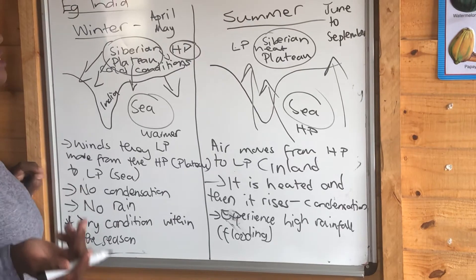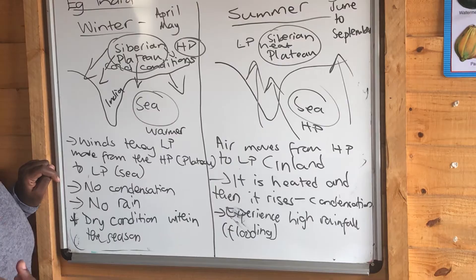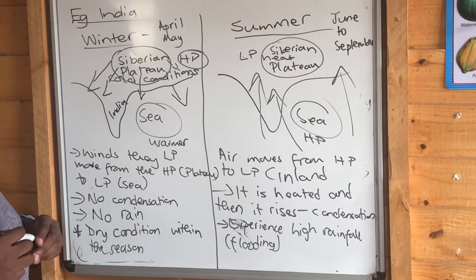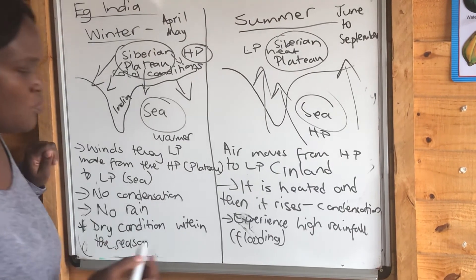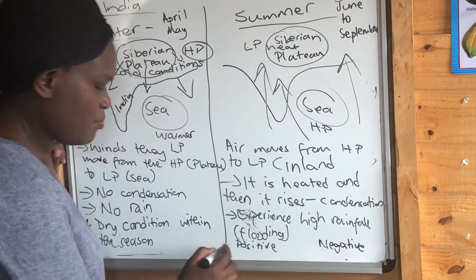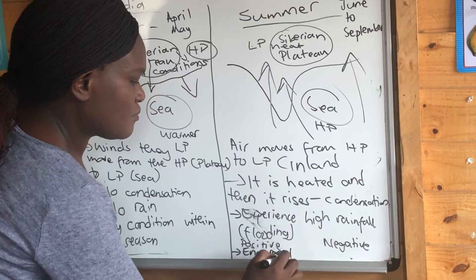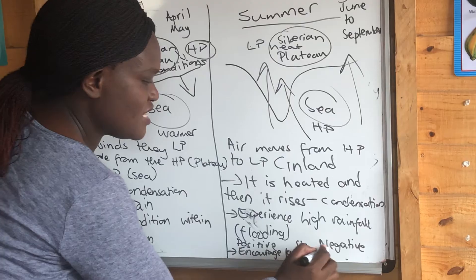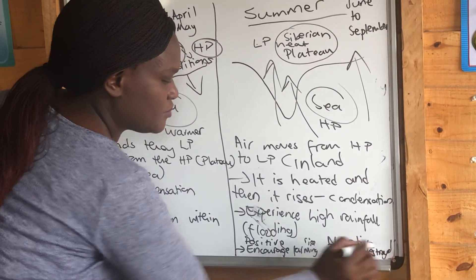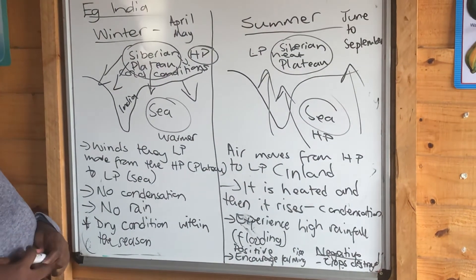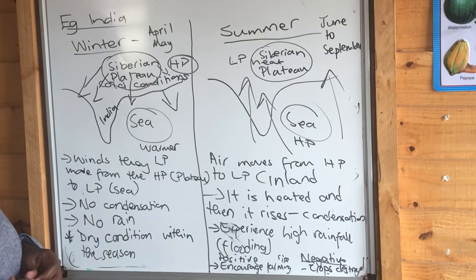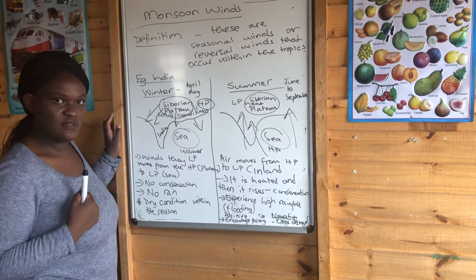What would be the impacts of summer and winter monsoon winds? With summer, a positive impact is that you can grow crops like rice, which need a lot of water — that's why there is a lot of rice farming in India. You must look at both positive and negative impacts for your paragraphing questions. On the negative side, crops can be destroyed by flooding. More rain can also mean more water for hydroelectric power, and more rice farming means more food. Those are some things to analyze when looking at the positives and negatives of monsoon winds.